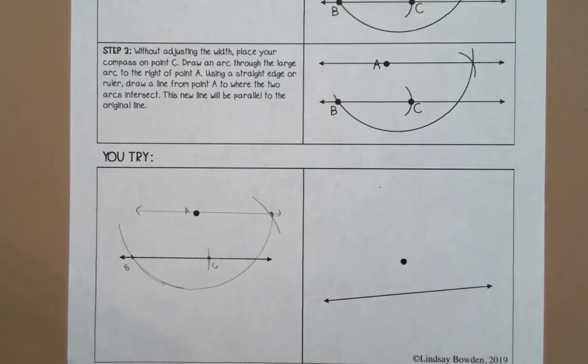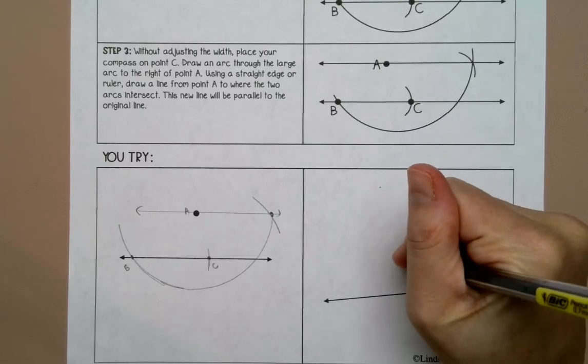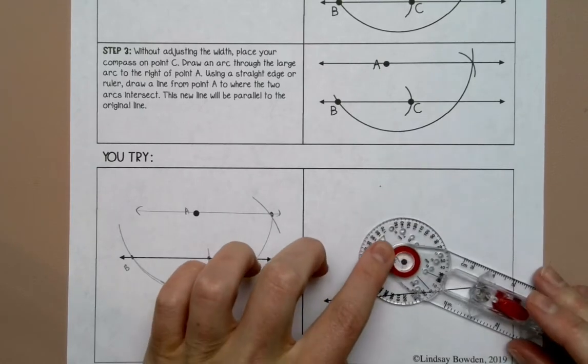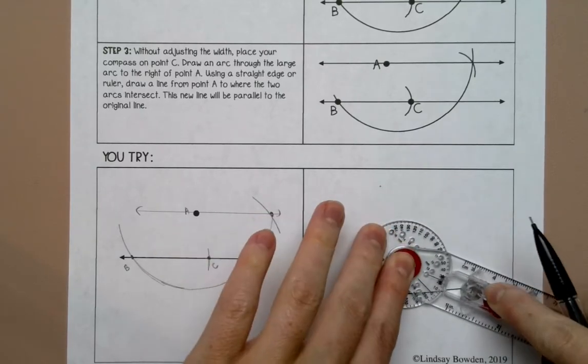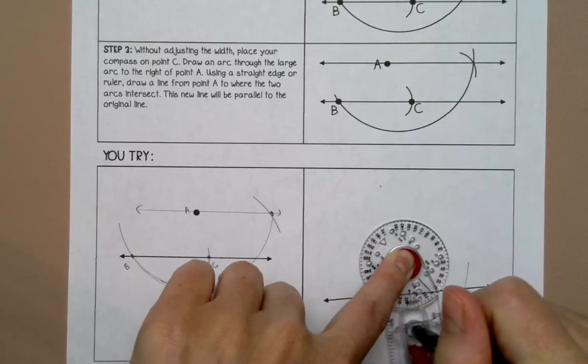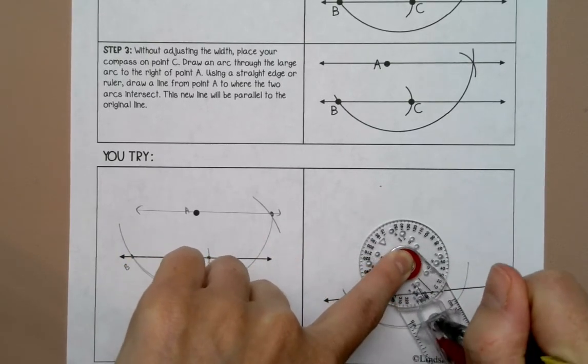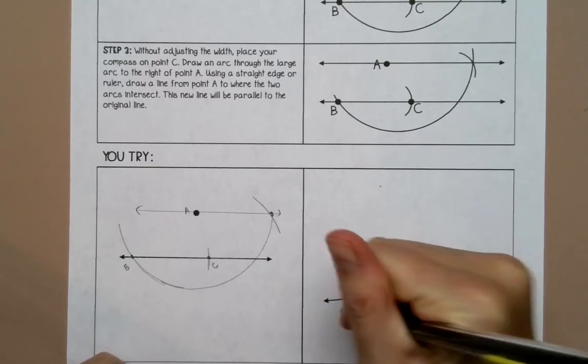If you want to pause the video now and try this one by yourself you can. I'm going to label this A. Draw an arc through A through both sides of the line. Label this B.